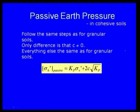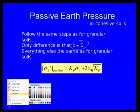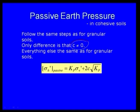For cohesive soil, the steps for calculating passive earth pressure are the same as for granular soil. The only difference is that cohesion C is not equal to zero. So sigma-H prime (passive) = Kp × sigma-v prime + 2C√Kp.